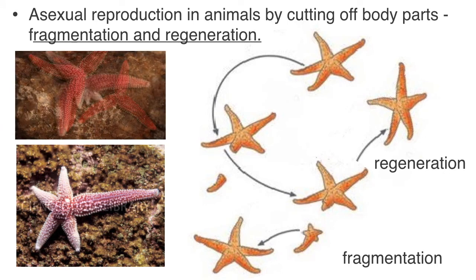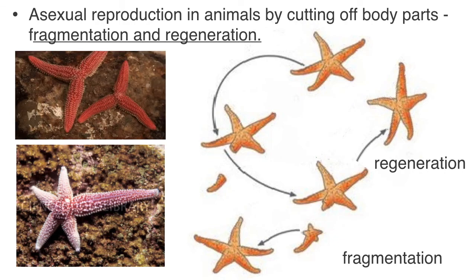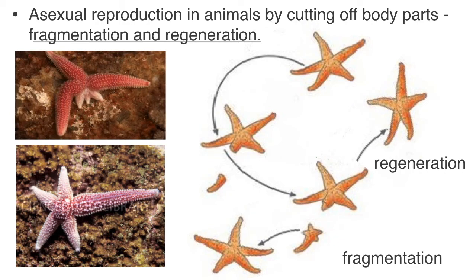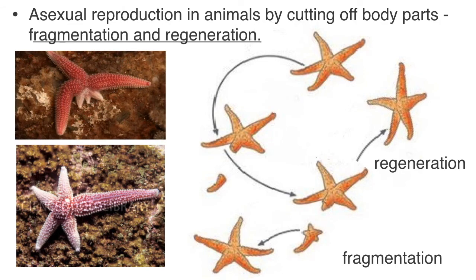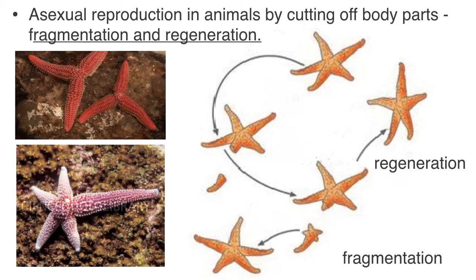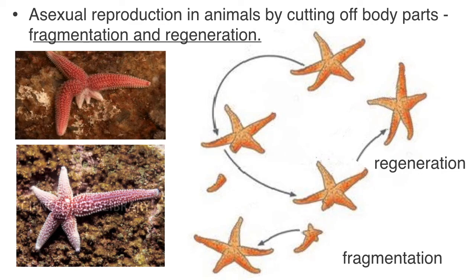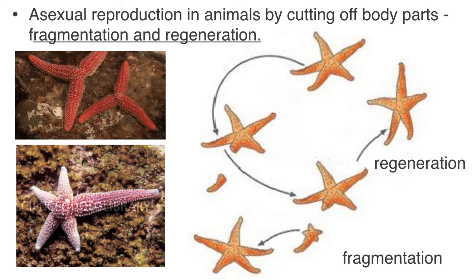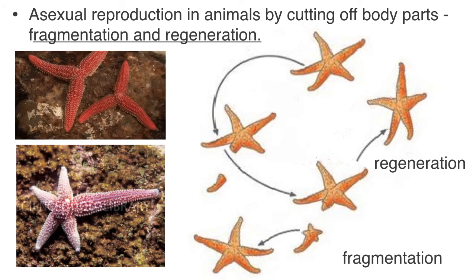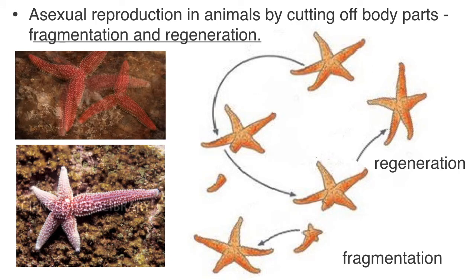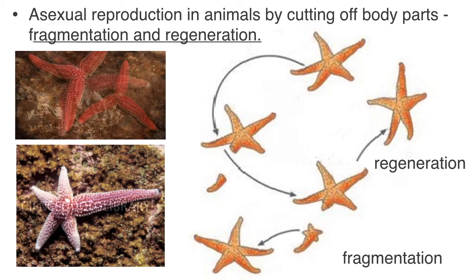So technically, a starfish has five arms — you could actually grow five starfish by just cutting up each individual arm, and each arm will regrow a new starfish around it. This is not the main way by which starfish reproduce, by the way. They actually reproduce sexually, but they can reproduce asexually through fragmentation and regeneration. Under this process, you don't need two parents — just one parent — and every single starfish that results is genetically identical to the parent starfish.